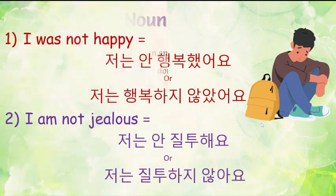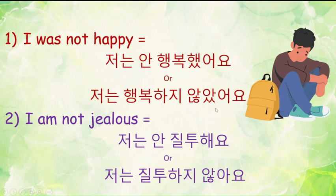Now let's see the examples. First one is: I was not happy. There are two ways. Using 'an': 'aan hingbukkha ji anha soyo'. Using 'ji antha': 'aan hingbukkha ji anha soyo'. The same rule applies as with all verbs and adjectives. Next is: I am not jealous. Again two ways: 'aan chiyutu hai ho' or 'aan hingbukkha ji anha soyo'.